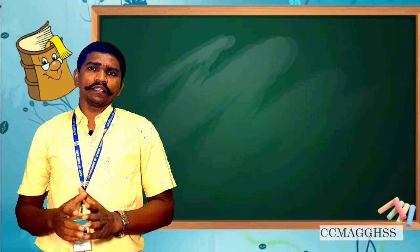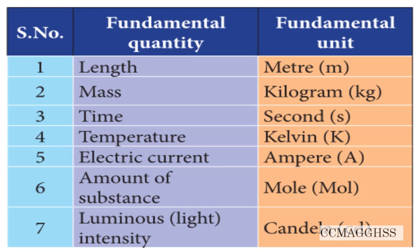The derived quantities are derived from the fundamental quantities, either by means of multiplication or by division. First we are going to see about fundamental quantities. What are the fundamental quantities? They are the examples, just go through this.